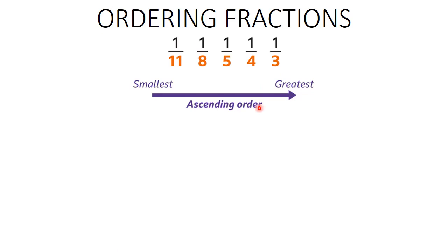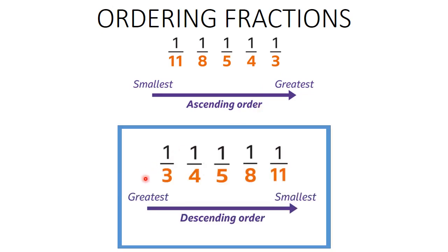In descending order for same-numerator fractions, you start with 1 over 3 — because the smaller the denominator, the bigger the value of the fraction. So in descending order, start with the smallest denominator since it has the largest fraction value. Remember, this only applies to same-numerator fractions. The largest value is 1 over 3 and the smallest is 1 over 11. It will take some practice.